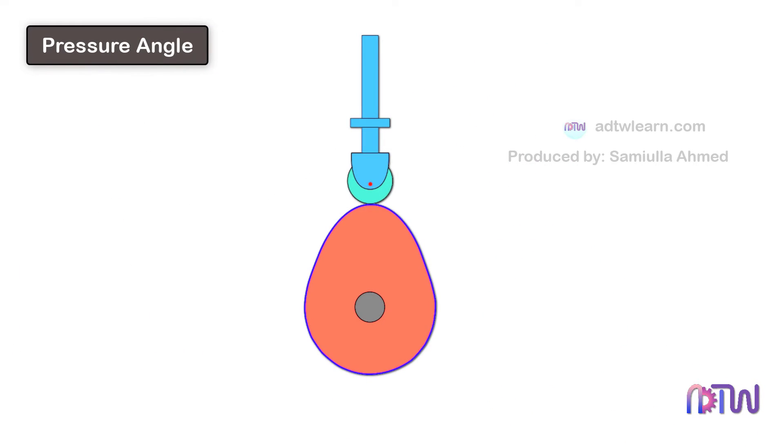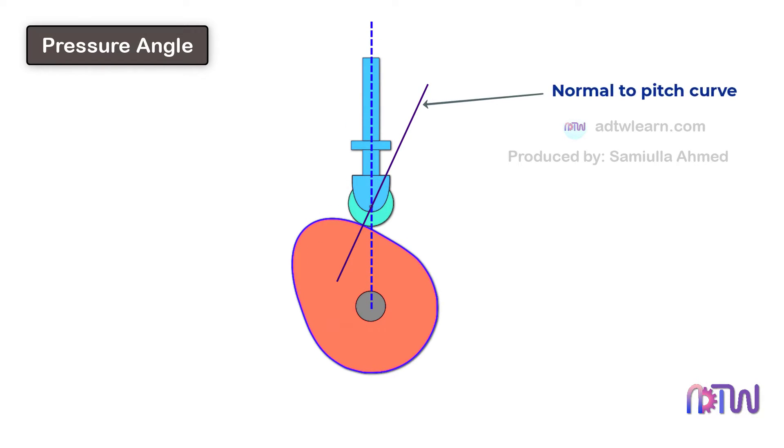Pressure Angle: It represents the steepness of the cam profile. The angle between the direction of the follower movement and the normal-to-pitch curve at any point is called Pressure Angle. If we draw a normal to the cam profile, this normal is passing through the Trace Point.